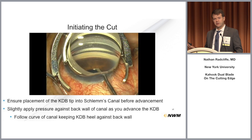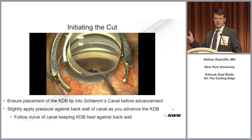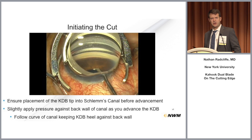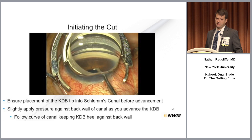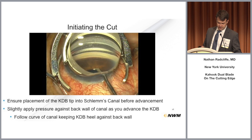This is similar to initiating a trabectome surgery, iStent placement, viscocanalostomy, or trab 360. Apply a little pressure and gently pierce the trabecular meshwork to get inside the canal of Schlemm. Once you do this, with only a little pressure, move the Kahook Dual Blade along the canal and excise the trabecular meshwork. If the eye is moving when you move the instrument, you're probably a little too deep and engaging the posterior wall of Schlemm's canal, which you don't want to do.